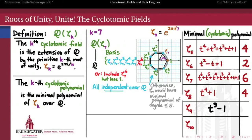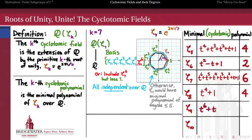How about the 9th? Factoring t to the 9th minus 1 using the difference of cubes technique, and then factoring t cubed minus 1 again, we get a product of a linear factor, a quadratic factor, and a 6th degree factor. The linear factor has root 1 (not zeta_9), and the quadratic factor has zeta_6 as a root (not zeta_9). Therefore the irreducible factor that remains, t to the 6th plus t cubed plus 1, is the minimal polynomial for zeta_9 over Q, and so the 9th cyclotomic field is degree 6 over the rationals.